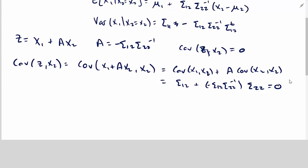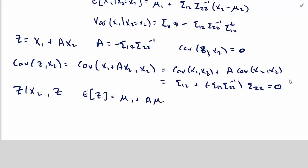So the distribution of z given x2 is just the distribution of z disregarding x2 because z is independent of x2. So let's calculate. And we know that z is normal because it's a linear combination of normals. So let's calculate the expected value of z, which is equal to mu 1 plus a mu 2.